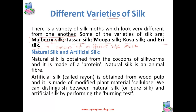Since everybody wants silk and there is more demand in the market, an artificial silk also exists. Natural silk is obtained from the cocoons of the silkworm and is made up of proteins — it is essentially an animal fiber. Artificial silk is also called rayon; it is obtained from wood pulp of certain plants and is a modified plant material called cellulose.